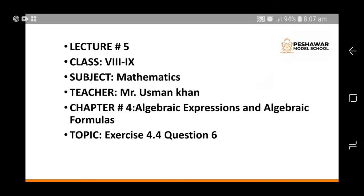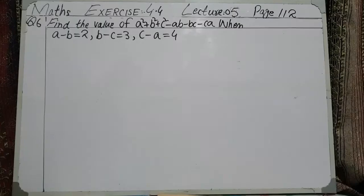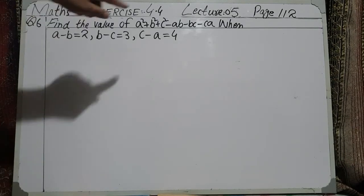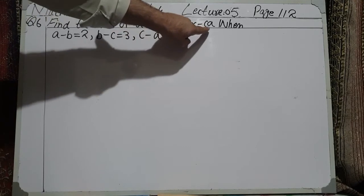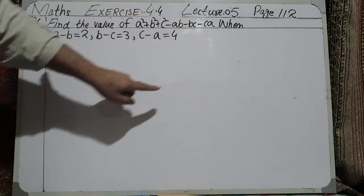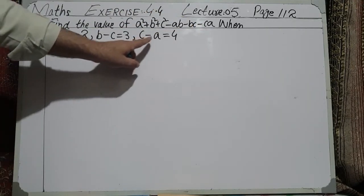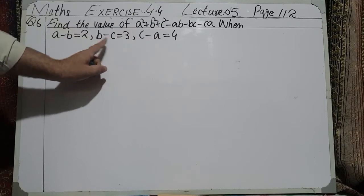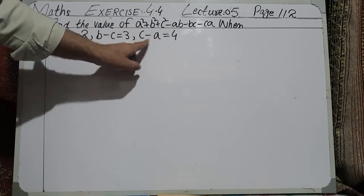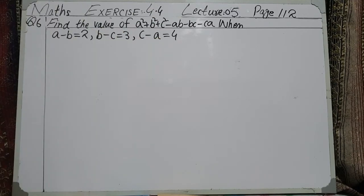My name is Usman Khan and this is lecture number 5 of exercise 4.4, question number 6. Find the value of A square plus B square plus C square minus AB minus BC minus CA, when A minus B equals 2, B minus C equals 3, and C minus A equals 4.